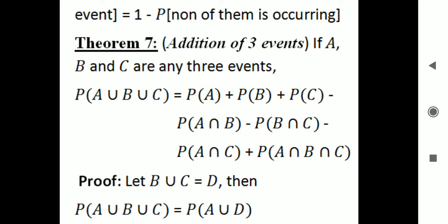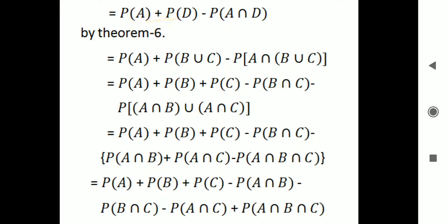For the proof, let B union C equal D. Then probability of A union B union C equals probability of A union D. By the addition of two events, this equals probability of A plus probability of D minus probability of A intersection D. Substituting D as B union C, we get probability of A plus probability of B union C minus probability of A intersection B union C.